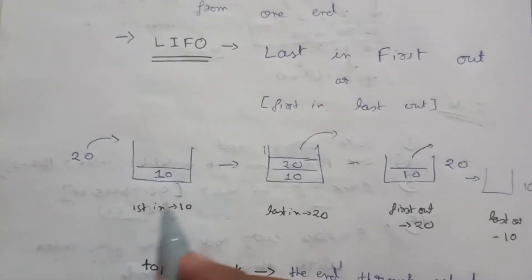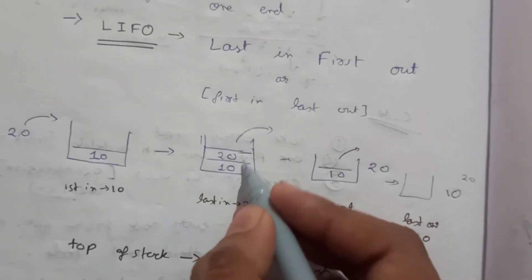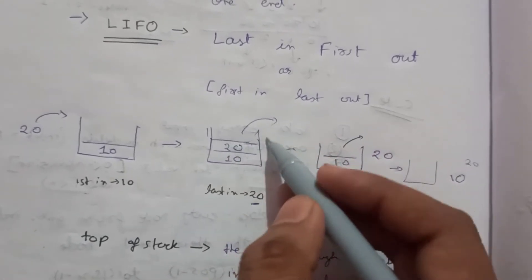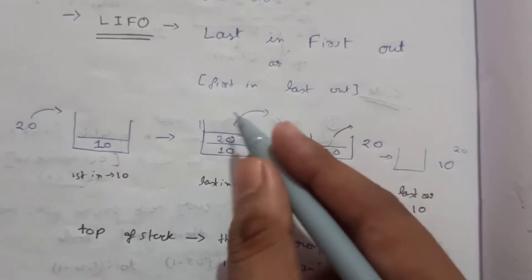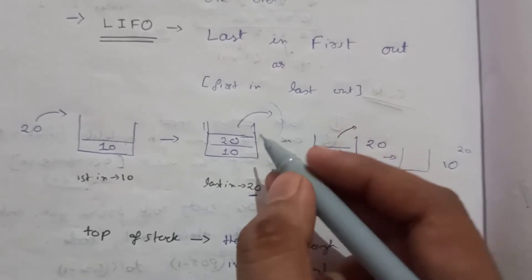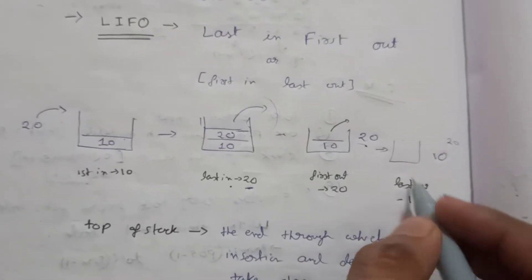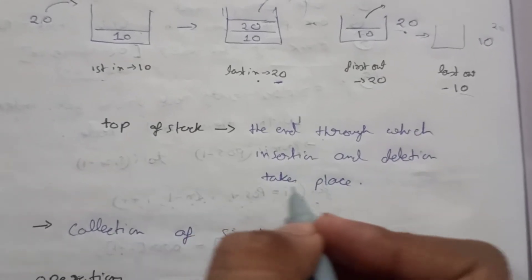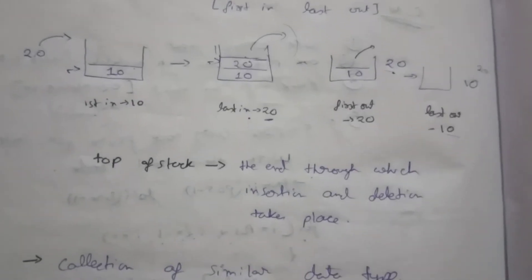Let's see this with an example. First we have 10 inside our stack — the first in is 10 — then we enter 20. The last in element is 20. Since insertion and deletion are both possible only from the top, the last in value 20 will be the first one out, and 10 will be the last out. The end through which insertion and deletion take place is known as the top of the stack.